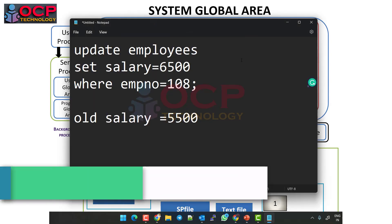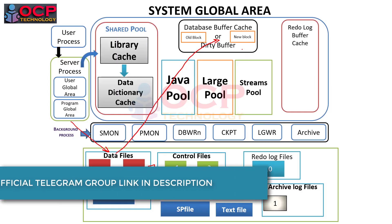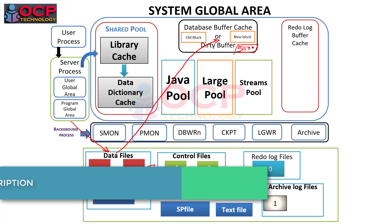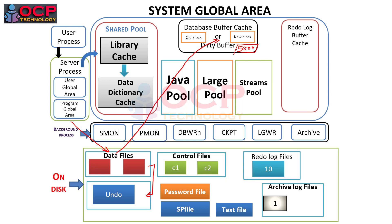The employee's old salary of 5500 is stored in the undo section. Once we update 5500 to 6500, the block in the database buffer cache is converted to reflect the new value of 6500.